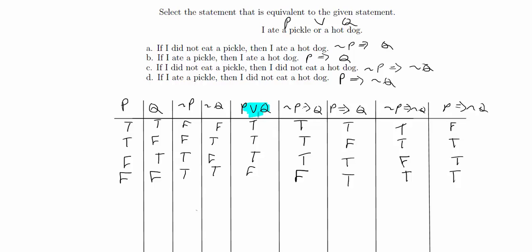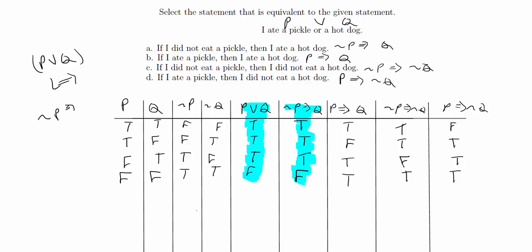Now we compare the P or Q column — which came from the statement 'I ate a pickle or a hot dog' — against the other columns. The only column with the same truth values is not P implies Q, because for all instances of P and Q these have the same values. Thus, P or Q is logically equivalent to not P implies Q, which was option A: if I did not eat a pickle, then I ate a hot dog.